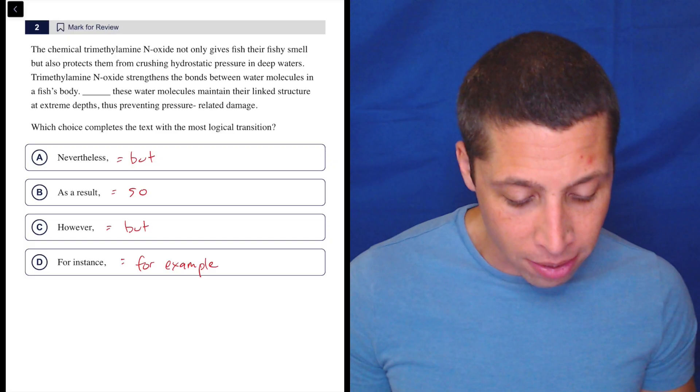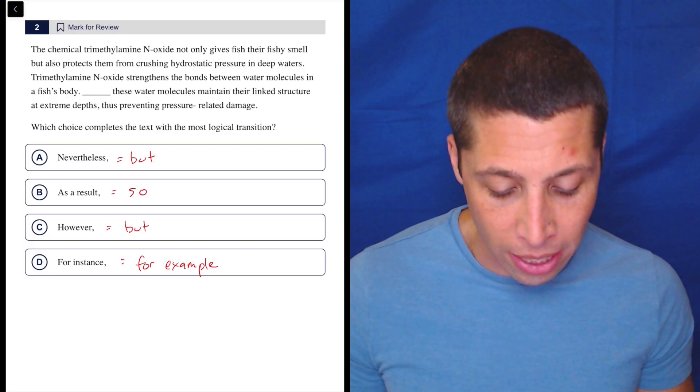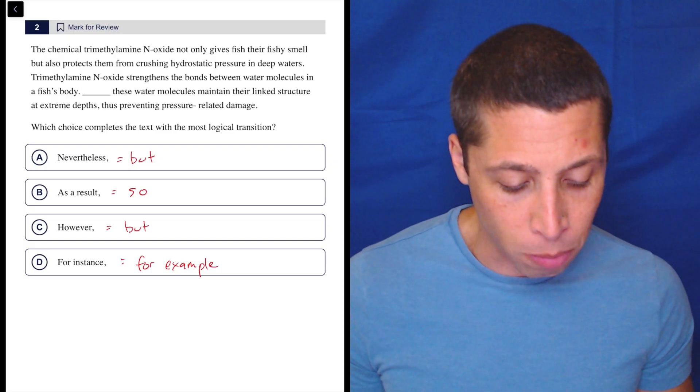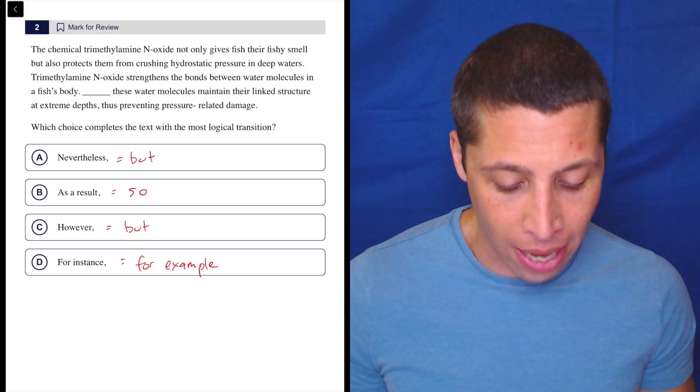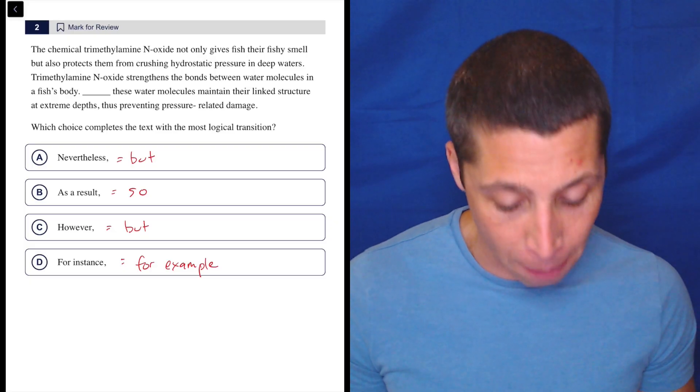Trimethylamine oxide strengthens the bonds between water molecules in a fish's body. These water molecules maintain their linked structure at extreme depths, thus preventing pressure-related damage.